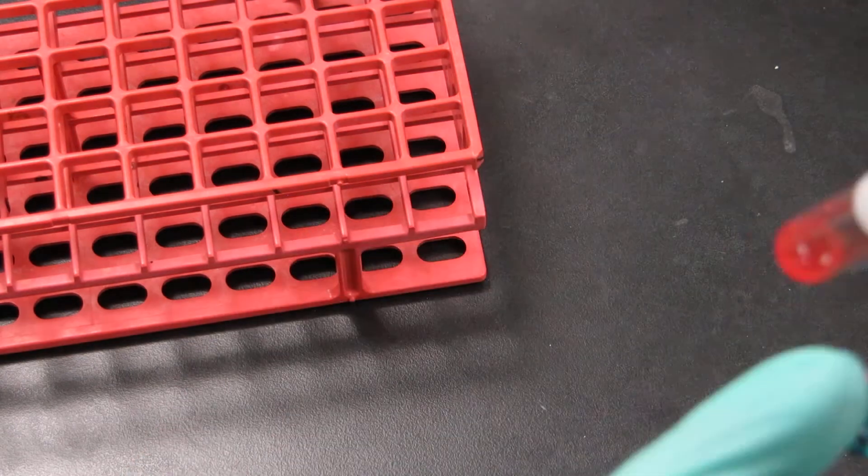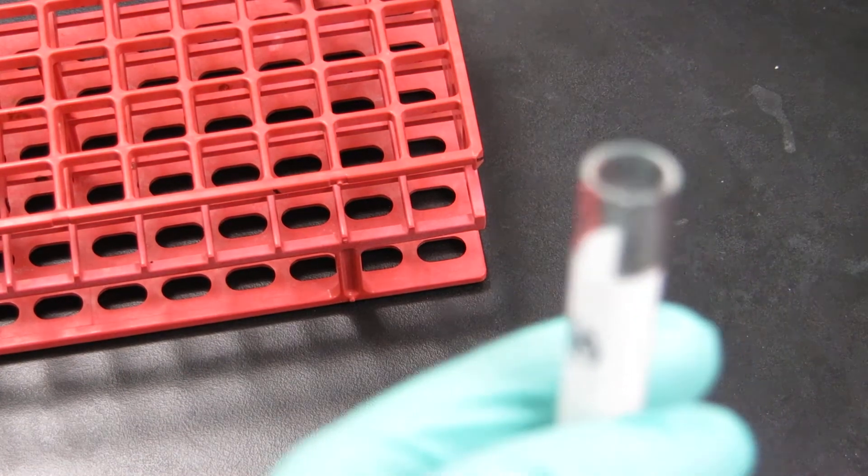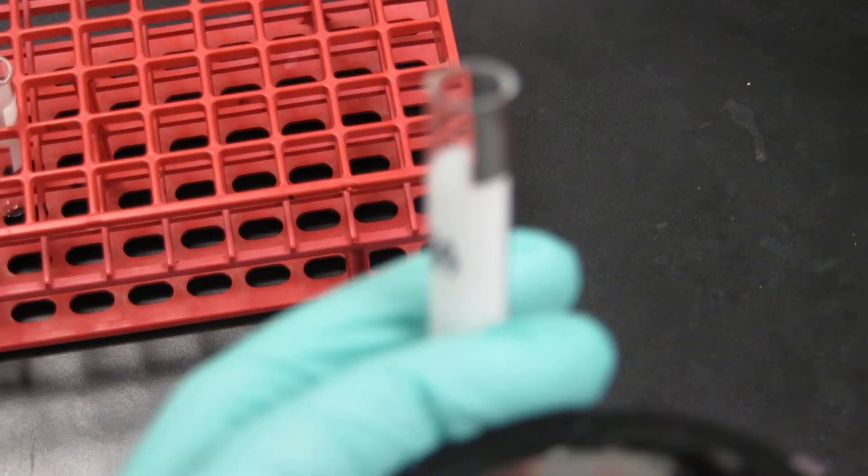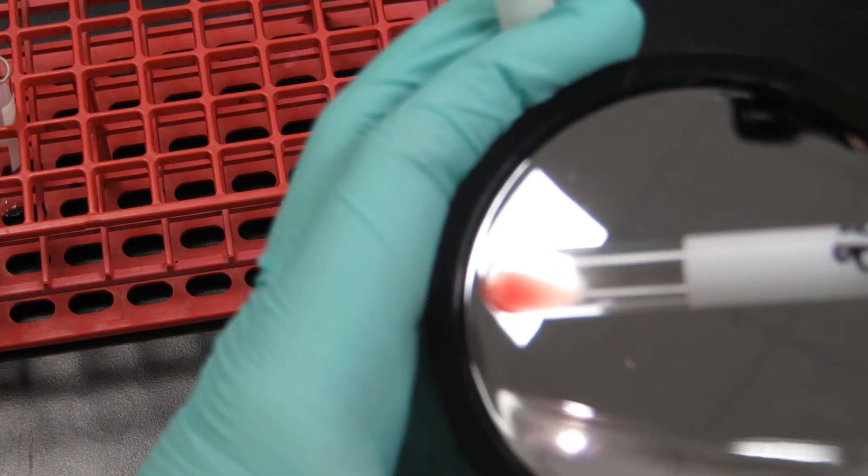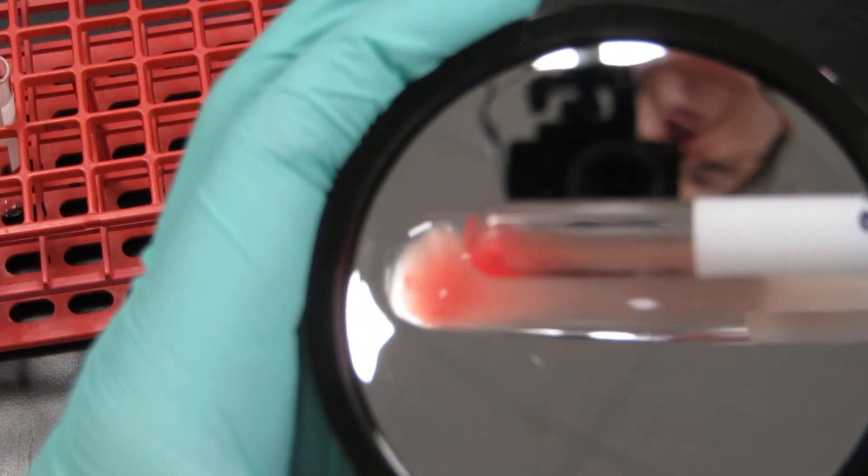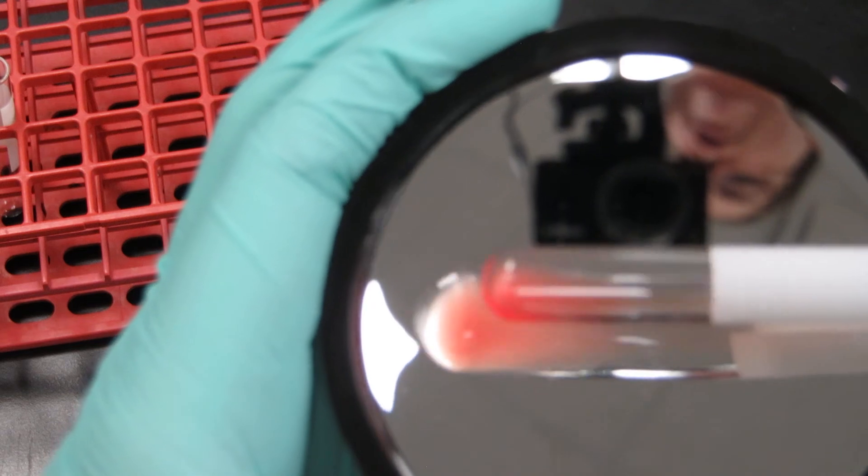And let's look at the other tube now. I'm going to zoom out just a little bit. All right, so notice you don't see any clumps and you might see some graininess. Those are individual red cells. This is a completely negative reaction.